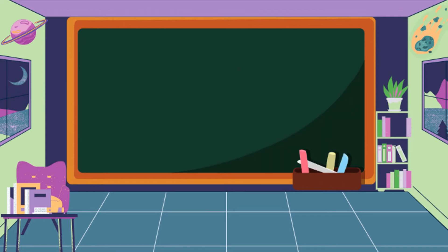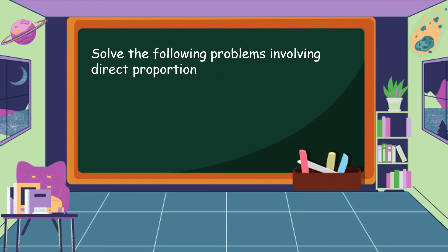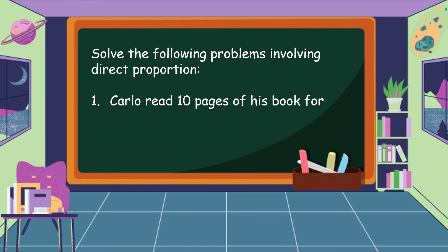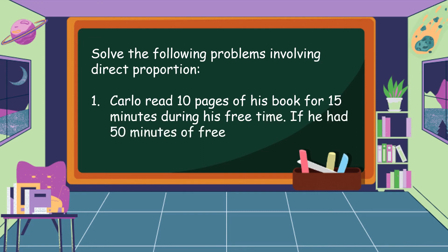Good job! You already know how to recognize a direct proportion. Now let's apply what you have learned. Solve the following problems involving direct proportion. Our first problem: Carlo read 10 pages of his book in 15 minutes during his free time. If he had 50 minutes of free time, how many pages could he have read?